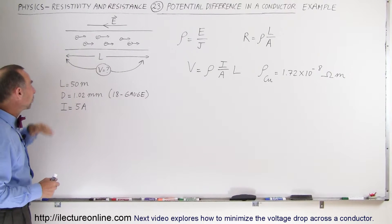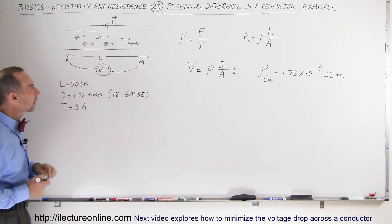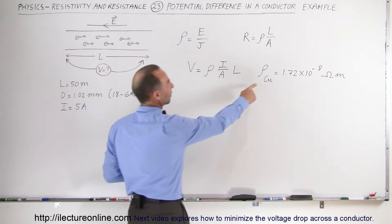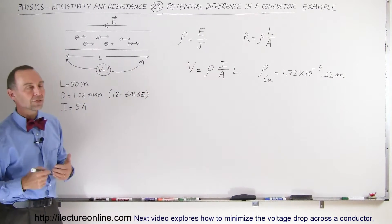The diameter will then be 1.02 millimeters and let's say we have a current of 5 amps flowing through the conductor. Remember that the resistivity of copper wire is 1.72 times 10 to the minus 8 ohm meters.